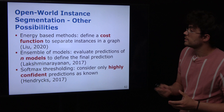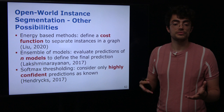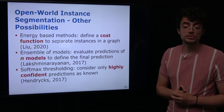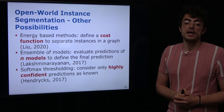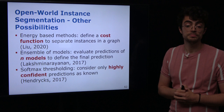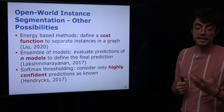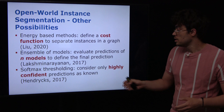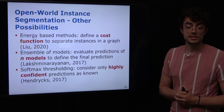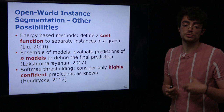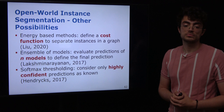Another possibility to achieve open-world instance segmentation is through energy-based methods — you define a cost function, represent your point cloud as a graph, and given your cost function try to separate the objects in the scene. Another option is an ensemble of models: you have N models predicting point classes and evaluate their predictions in a voting scheme to arrive at final predictions. Another possibility is softmax thresholding — given instance predictions and class confidence, you assign the known predicted class for highly confident predictions; for low-confidence predictions you still consider the instance but assign it as an unknown class.